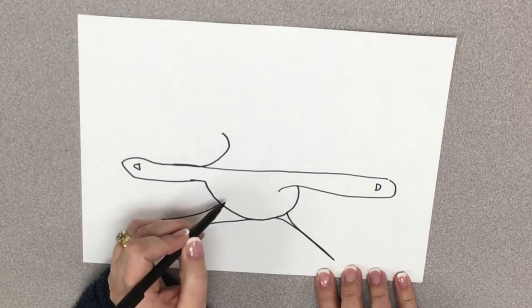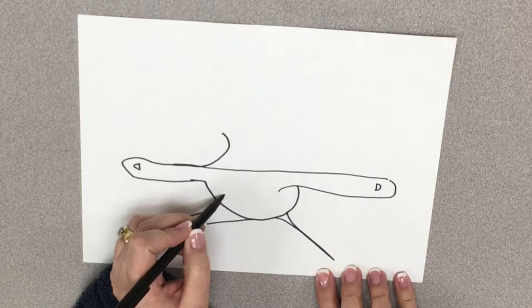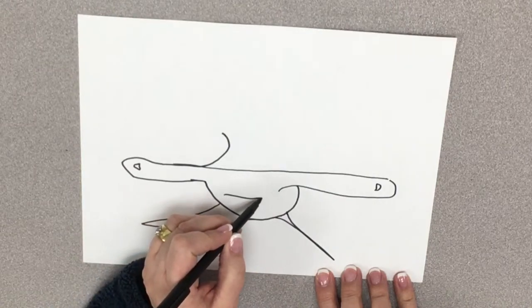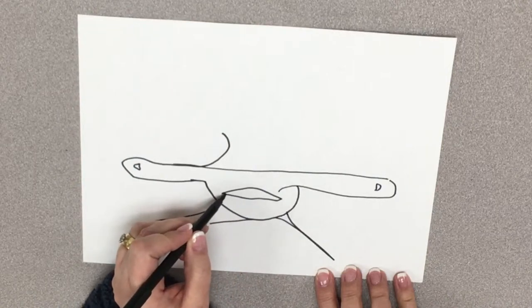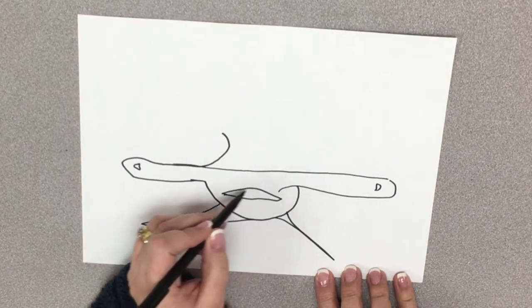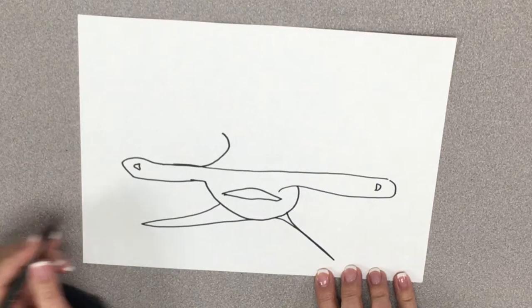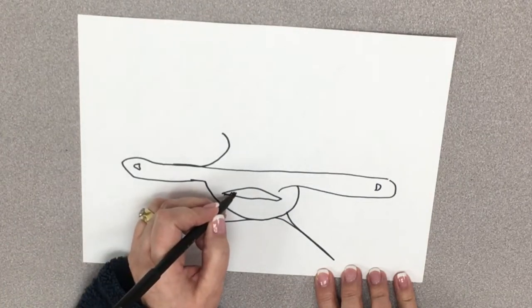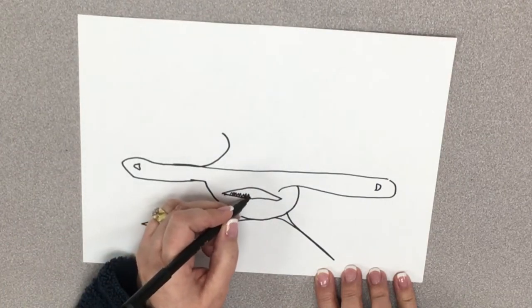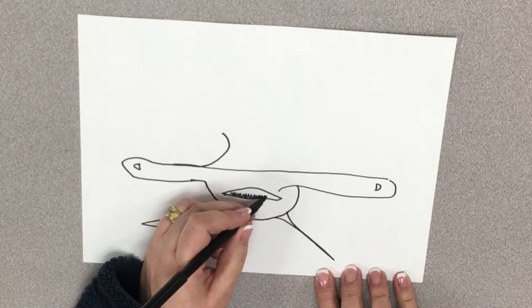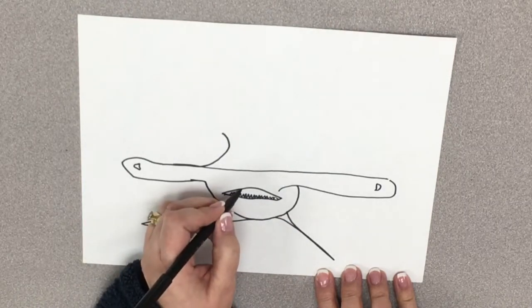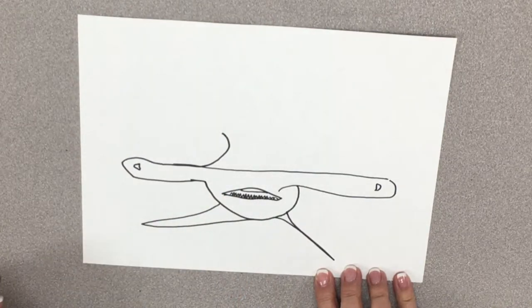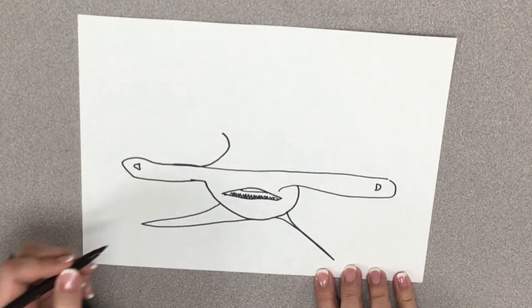So now we're going to draw the mouth. So the mouth is right here. We're just going to give it, it's going to be kind of wavy at the bottom and then curved at the top. And then he's got all his shark teeth in here. Cha cha, shark teeth. All right. And then he's got like a little tongue kind of thing in the back.